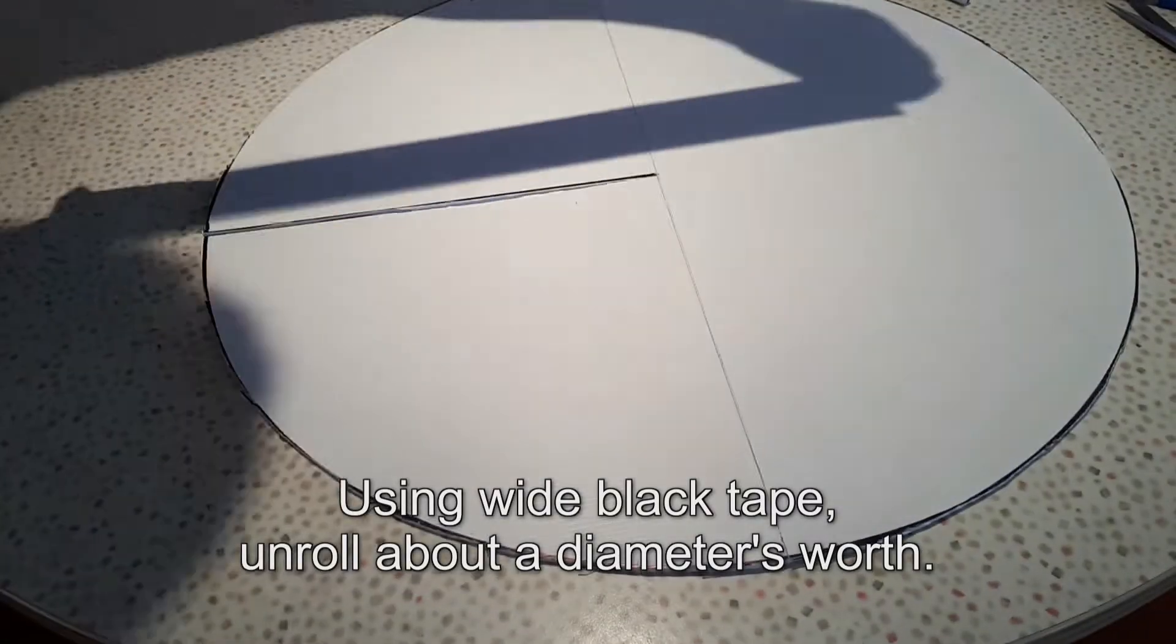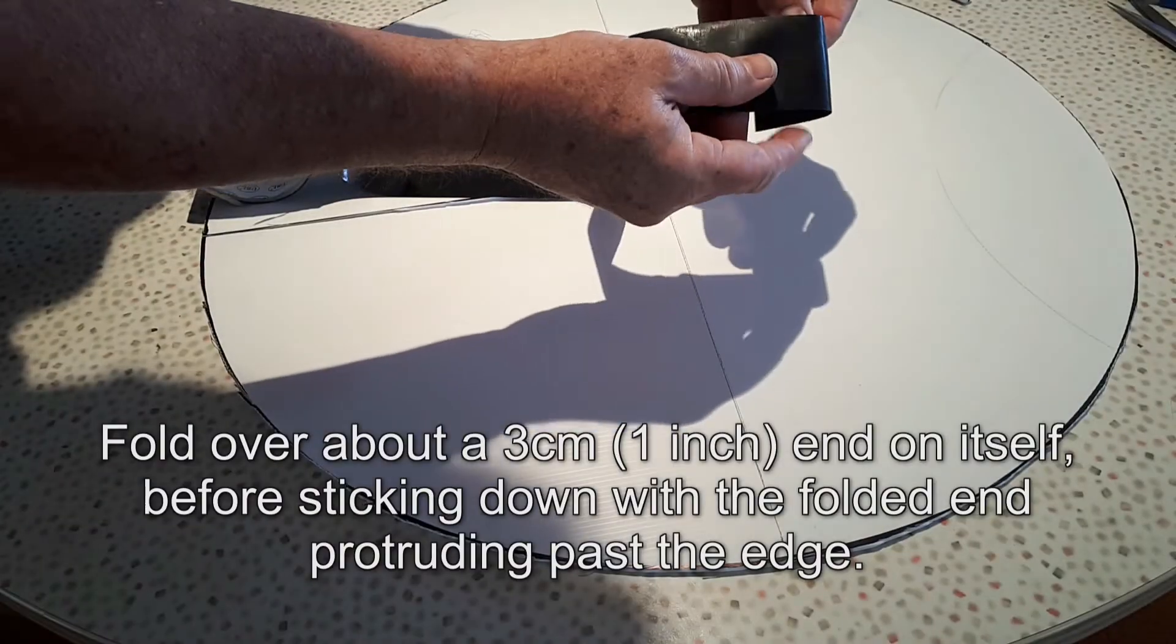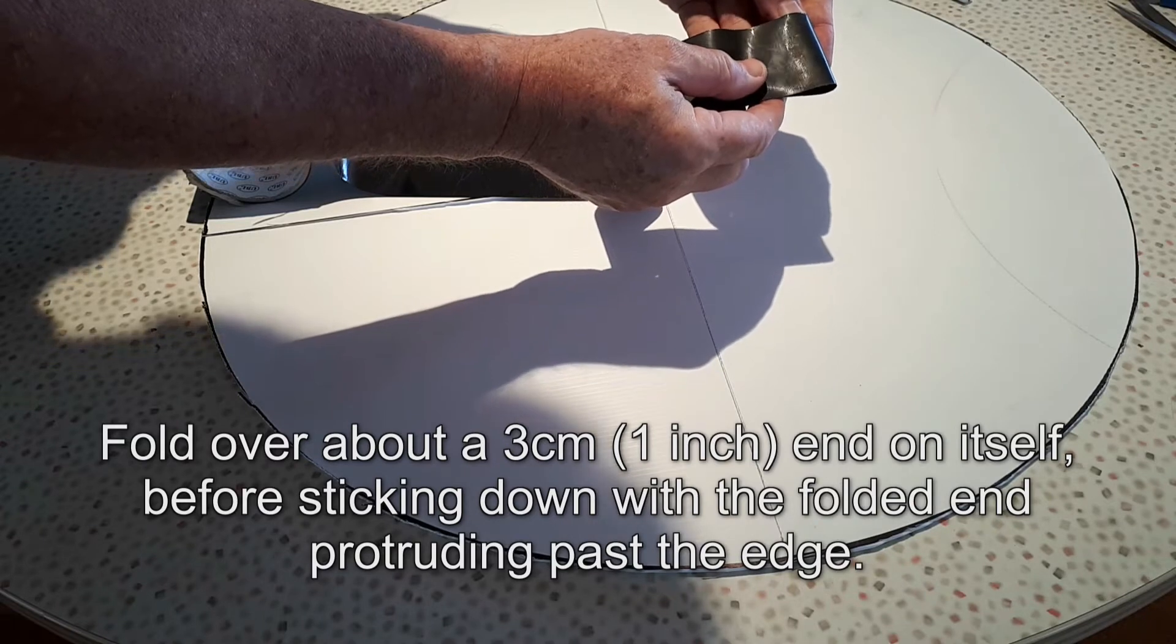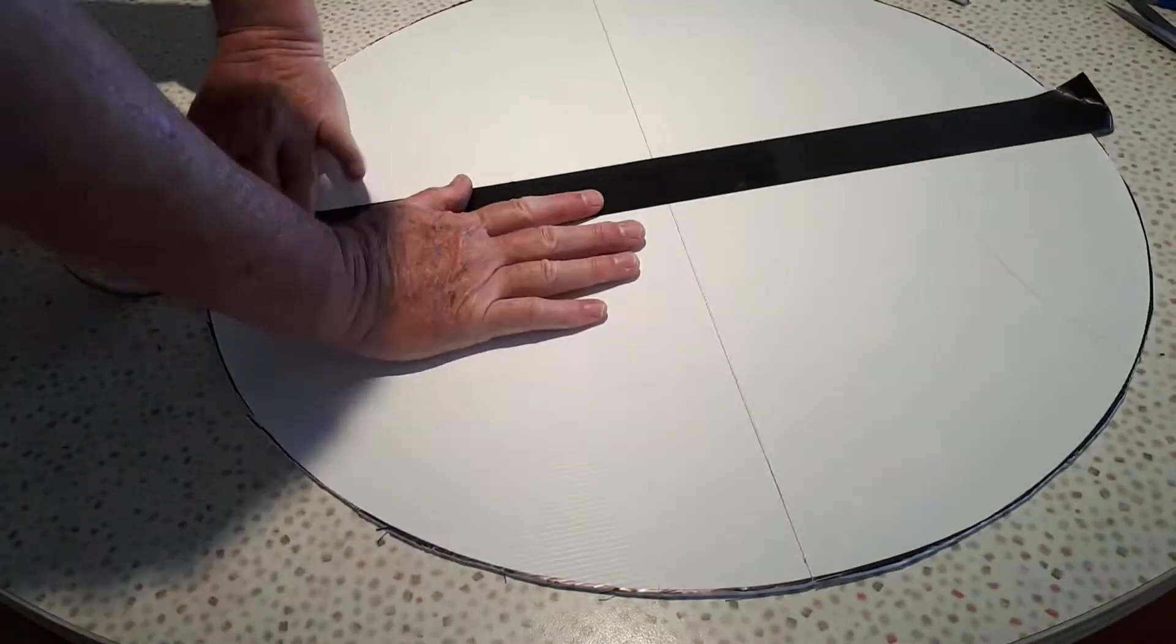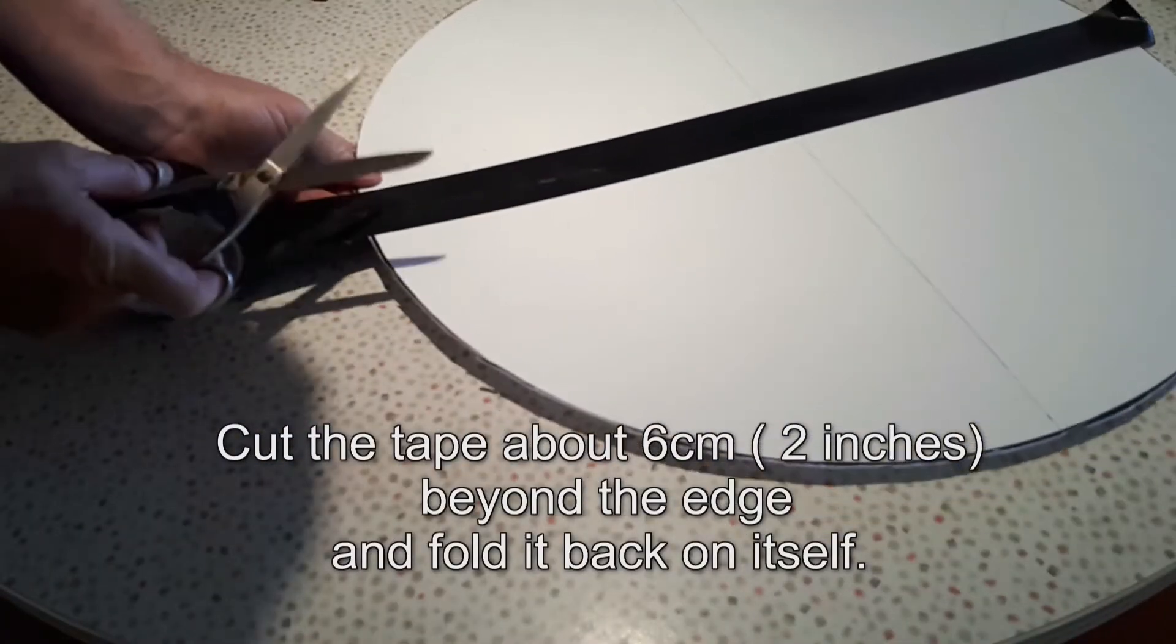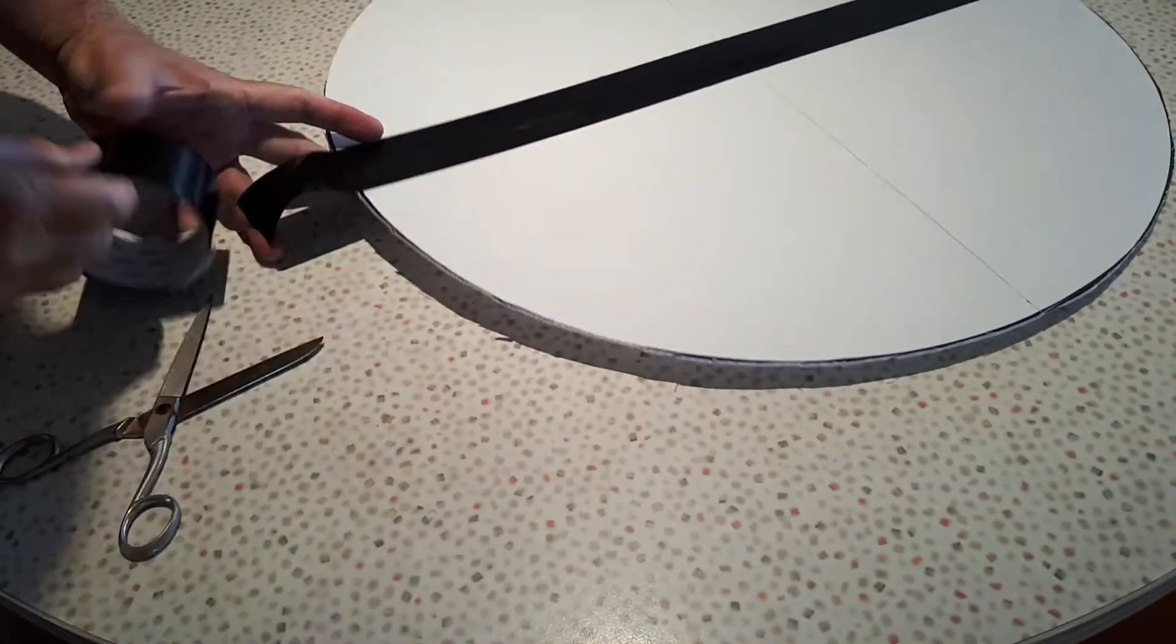Using wide black tape, unroll about a diameter's worth and a little bit more. Fold over about 3cm at the end back onto itself before sticking down with the folded end protruding past the edge of the circle. Now cut the tape about 6cm beyond the edge and fold it back on itself so you've got a tab on either end.